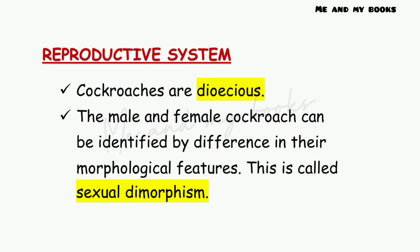Cockroaches are dioecious organisms, meaning male and female reproductive organs are located on different organisms — there is a male cockroach and a female cockroach. The male and female cockroach can be identified by their difference in morphological features, such as the presence or absence of anal styles. This phenomenon is called sexual dimorphism.